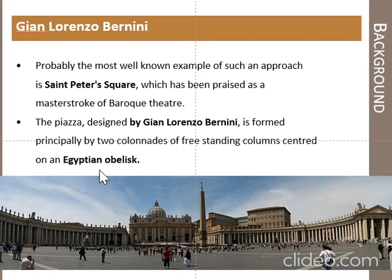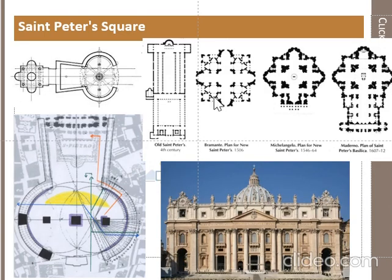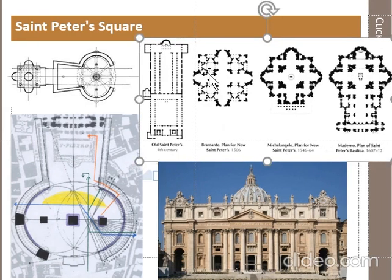St. Peter's Square is the most famous architectural design in the Baroque style, designed by Bernini. It is formed principally by two colonnades of freestanding columns, centered by an Egyptian obelisk. Maderno added the base of the nave in 1605 and finished the broad facade in 1612. These are the stages in which St. Peter Basilica church was designed.